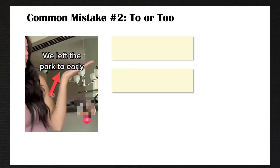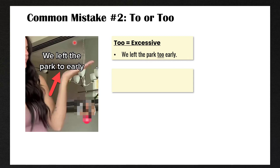I took a screenshot of this TikTok video. The woman wrote 'we left the park to early' — and this is incorrect. She wants to use too with double O, which means an excessive amount: we left the park too early. She was talking about her child who was crying because they left the park too early and the child wanted to leave later. You could say 'we went to the park' for motion, but in this case too means excessive, so we have to add an extra O.